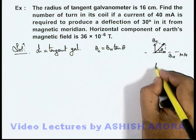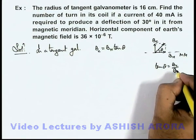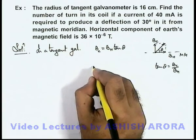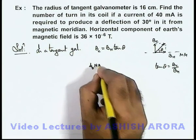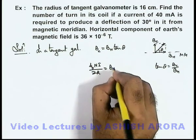If this angle is θ, we can write tan θ = Bc/Bh. We know the value of magnetic induction due to the coil is given as μ₀NI/2R, which equals Bh tan θ.